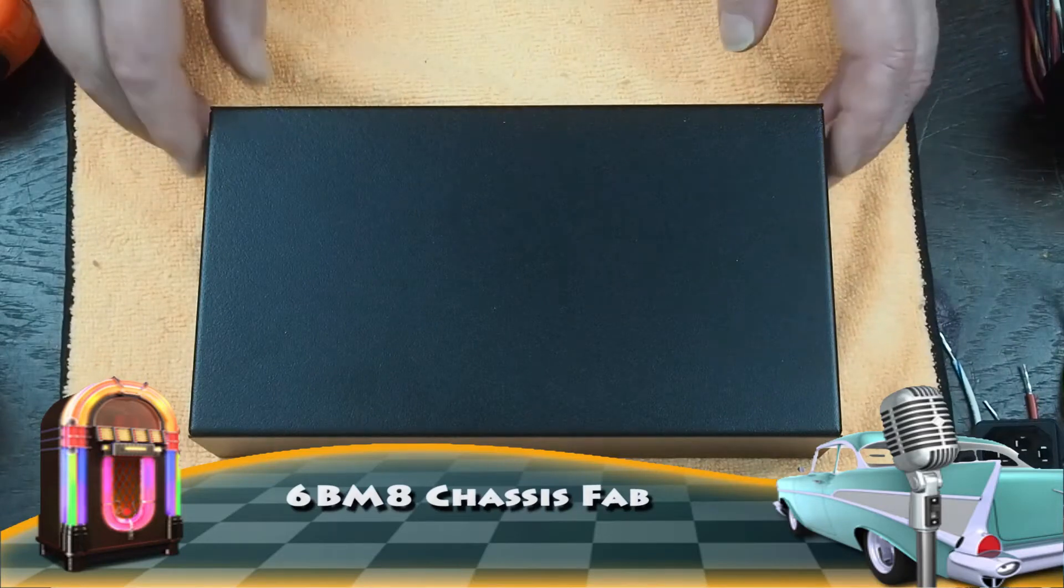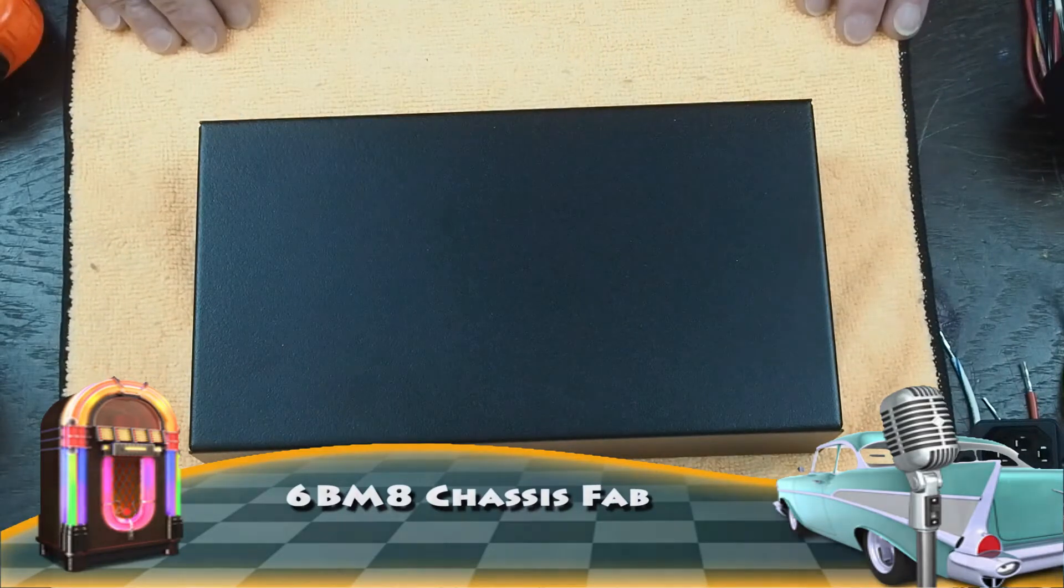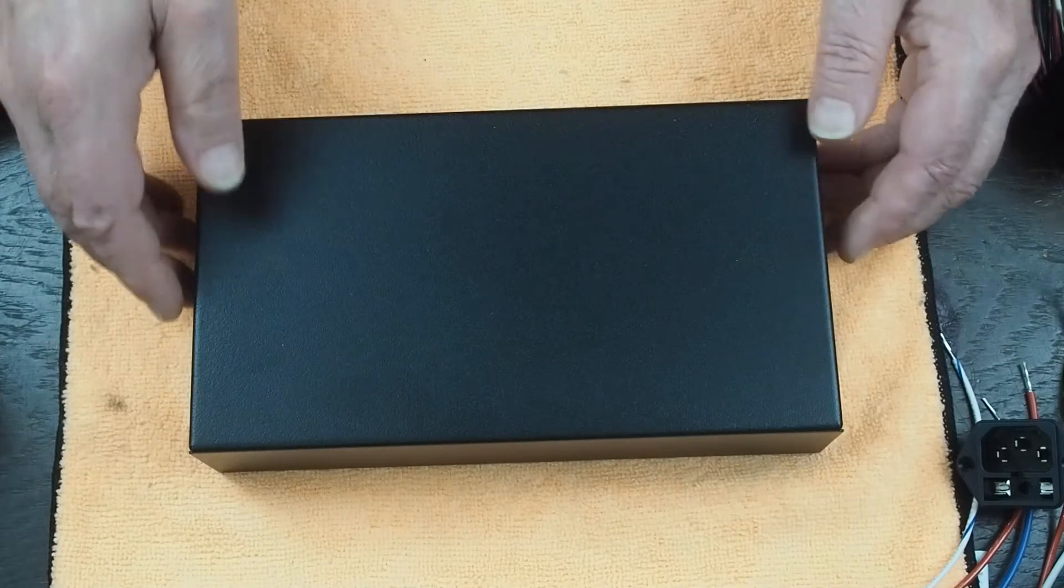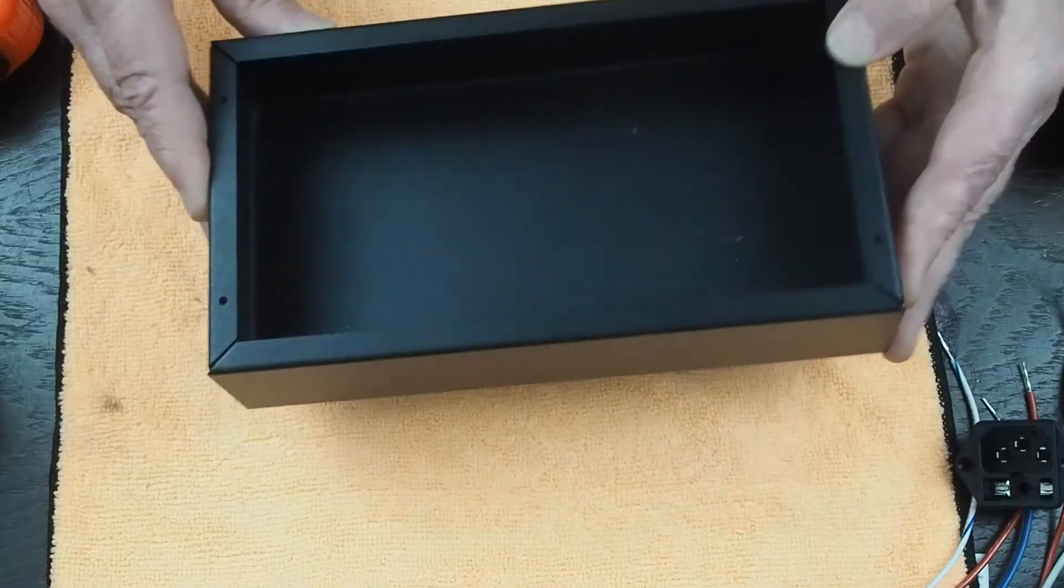Okay, the mail came today and my Hammond chassis came in. This is a 5x9x2 steel chassis.